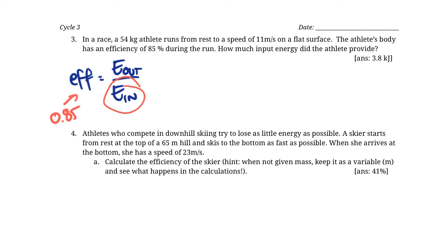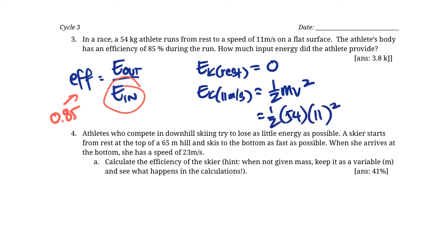The kinetic energy at rest is 0. The kinetic energy at 11 meters per second is what we need to find, because that's how much you increased your kinetic energy by. We know this is 0.5 mv squared. The mass is 54 kilograms, the speed is 11 squared. The total amount of energy required to get the athlete up to that speed in an ideal world is 3267 joules.